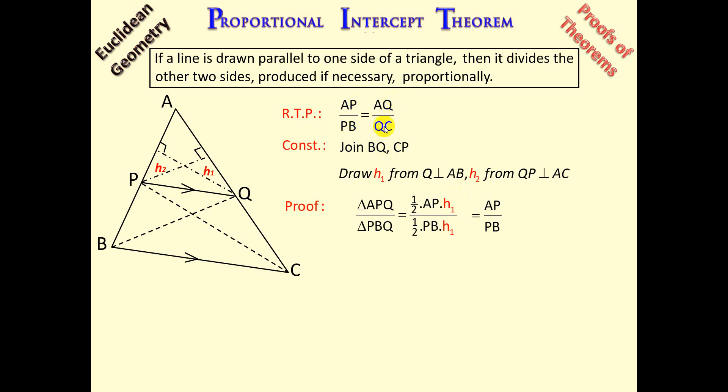Now we move on to the right-hand side of what we're trying to prove. So we're going to take triangle AQP over triangle QCP. And in the same way, remember our area formula is half base times height. So area of triangle APQ is half base, which is AQ, times the height, which is H2.